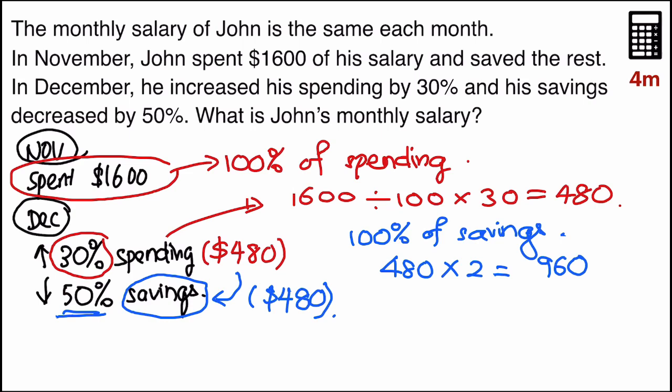So by right, he should be saving $960. But because he spent more, he managed to save only $480 that month. So what is John's monthly salary? I will take $960 plus $1,600, and I will get my answer as $2,860. That is his salary.